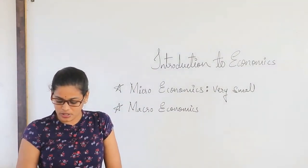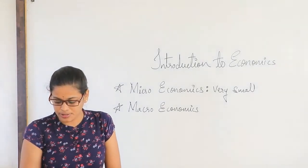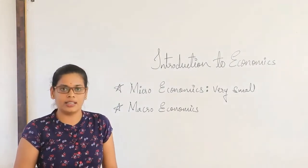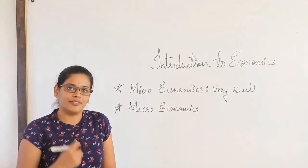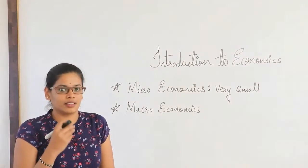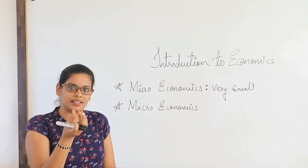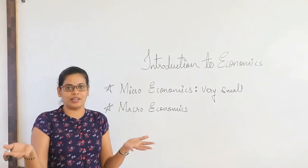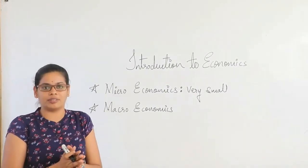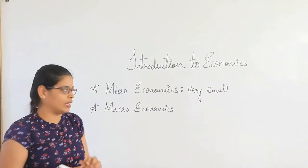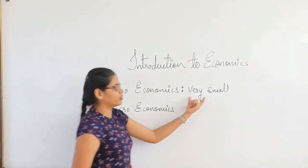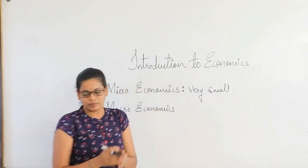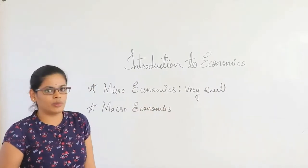Microeconomics is a study of decision making to use resources by the smallest components of the society. So if you are taking me as a component here, I am being considered a small component because we are not talking about a very large entity. We are not talking about something in total. We are talking about something which is very small. That's what is called microeconomics.